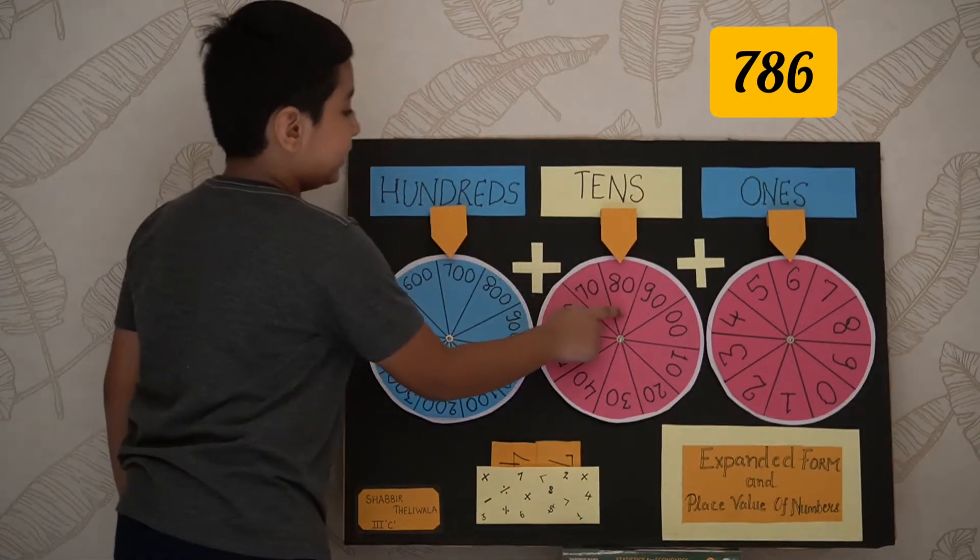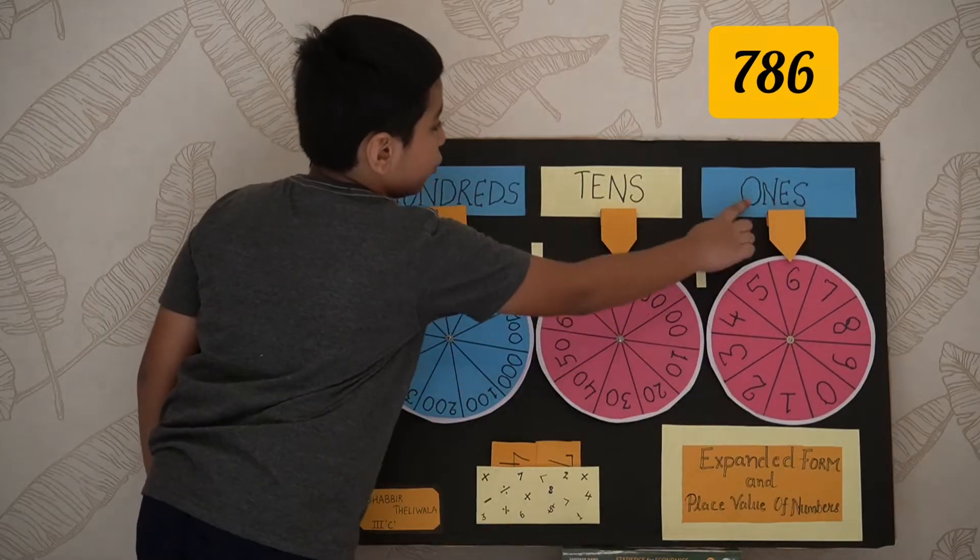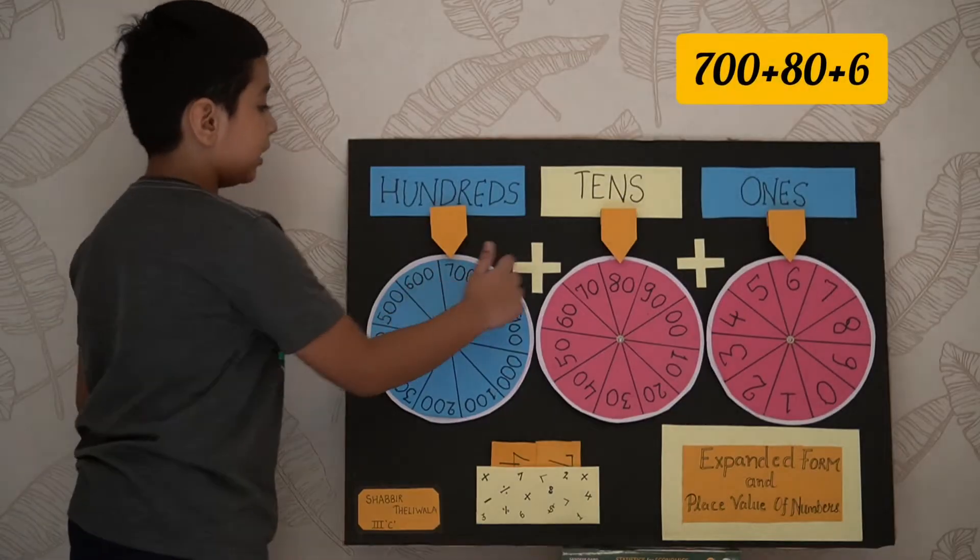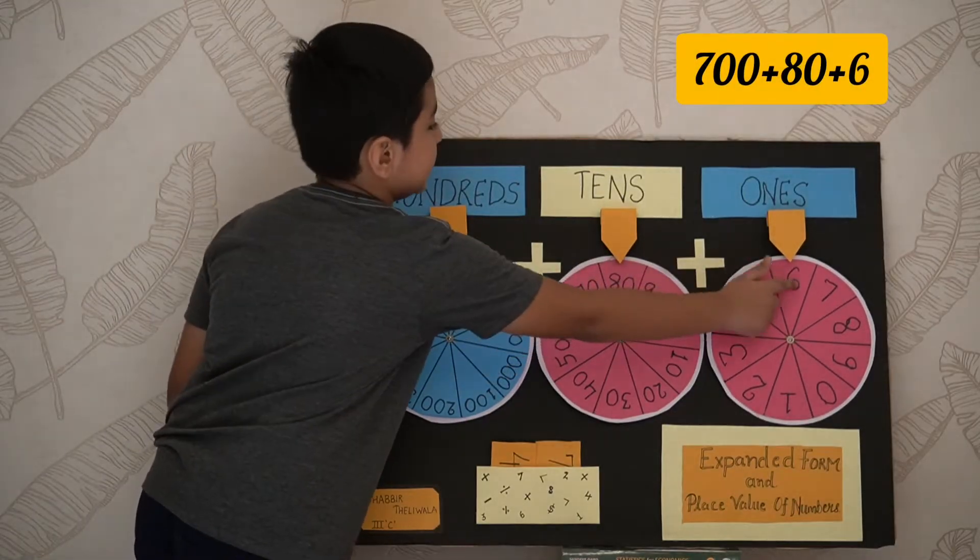The expanded form of 786 is 700 plus 80 plus 6.